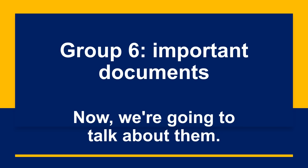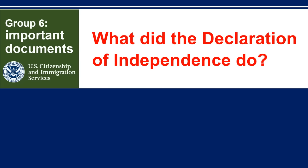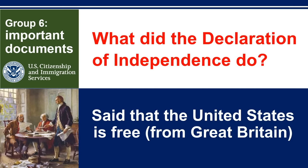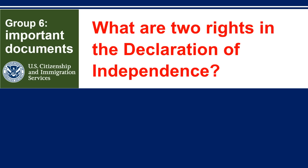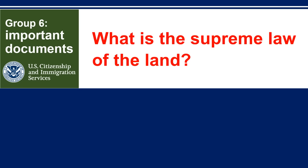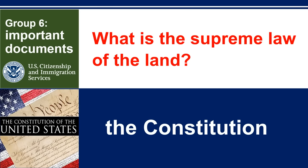Group 6: Important Documents. Now we're going to talk about them. What did the Declaration of Independence do? Said that the United States is free from Great Britain. What are two rights in the Declaration of Independence? Life, Liberty. What is the Supreme Law of the Land? The Constitution.